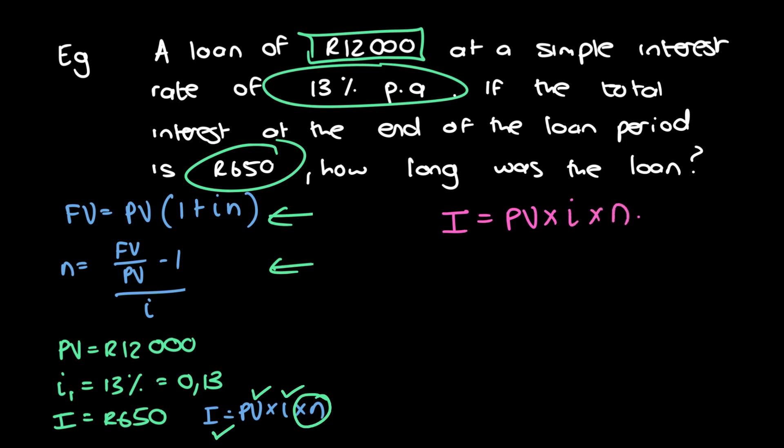So we only needed I is equal to PV times i times n. And then we make n the subject of the formula, which means we're going to divide through by PV times i. So we have I divided by PV times i is equal to n. And I'm talking about I and i—please note, I'm talking about the big I and the small i. So the formula, just in case you're not comfortable with it looking in that direction, is that.